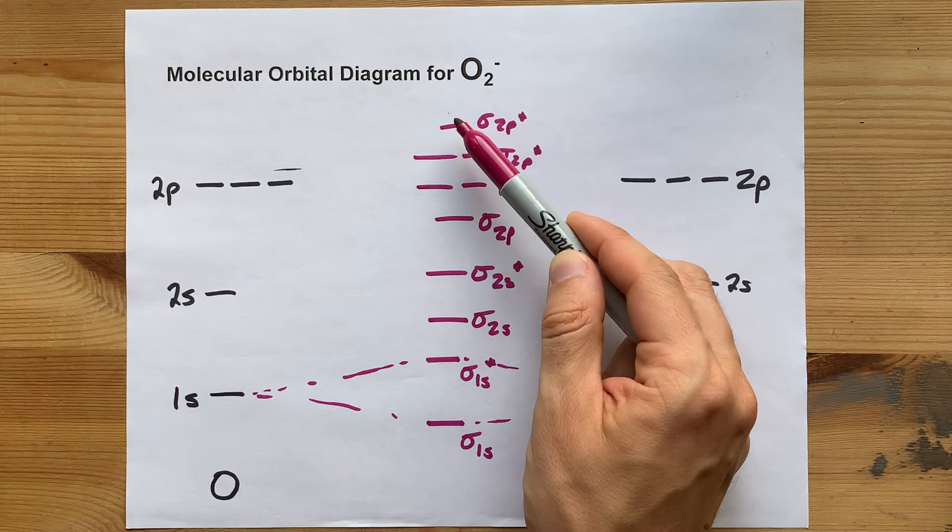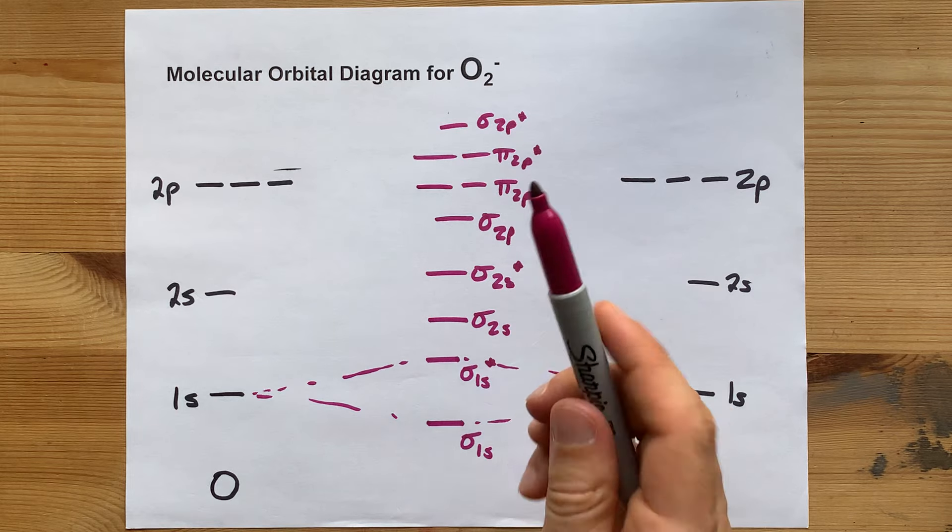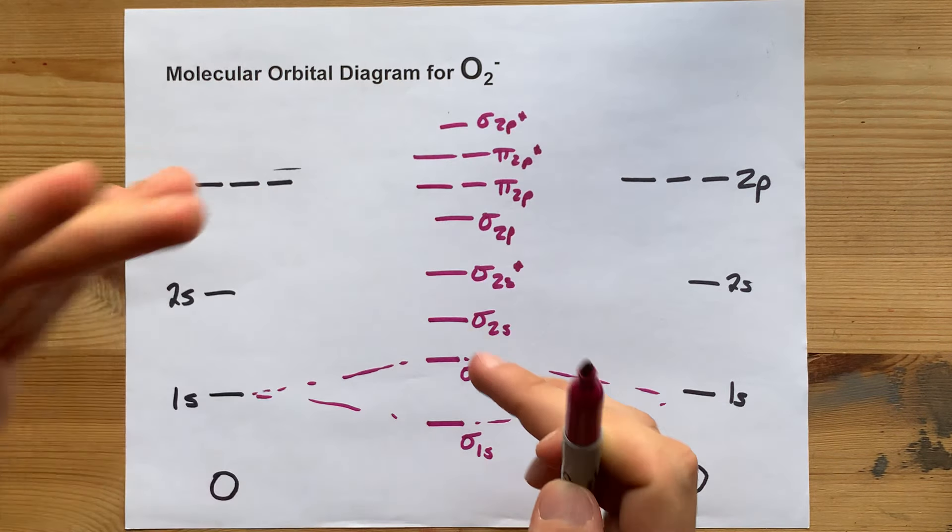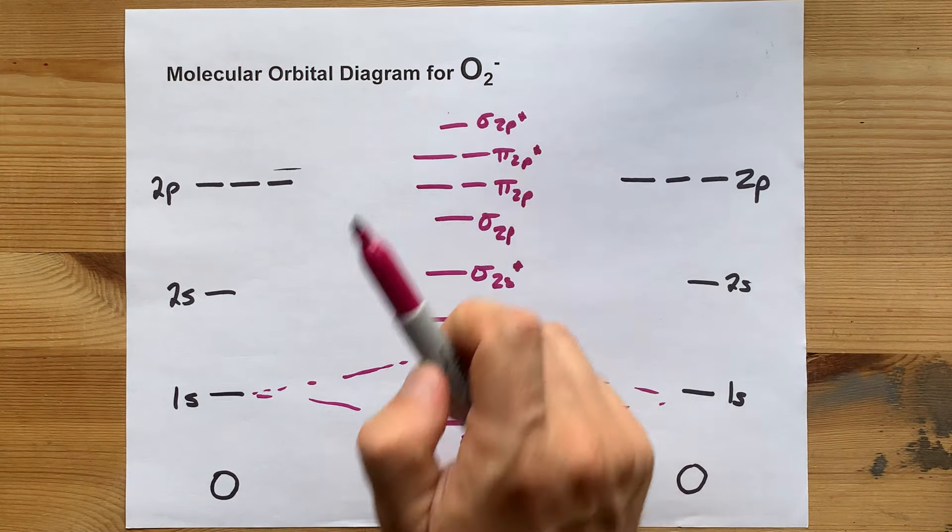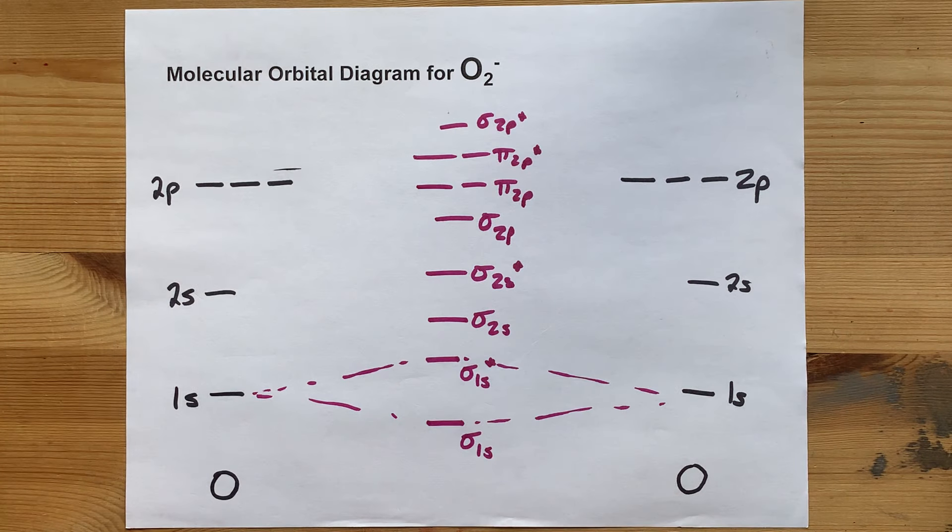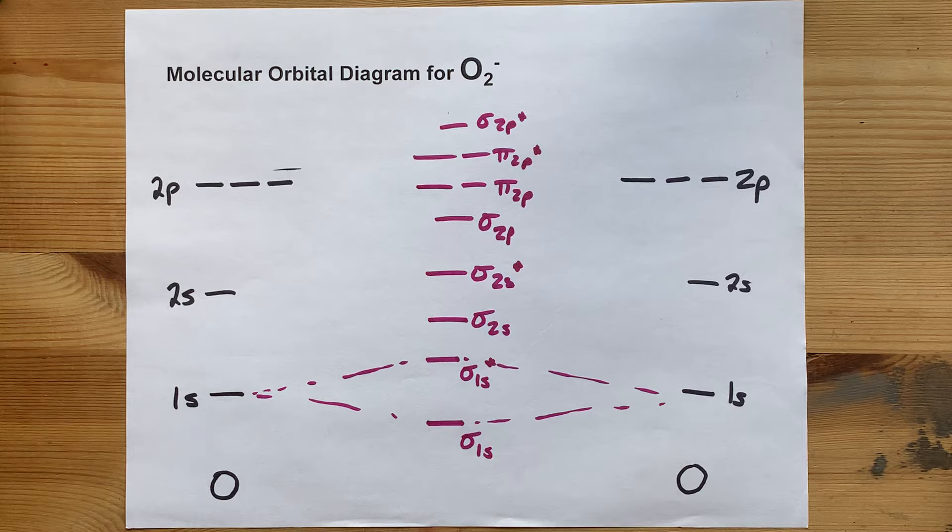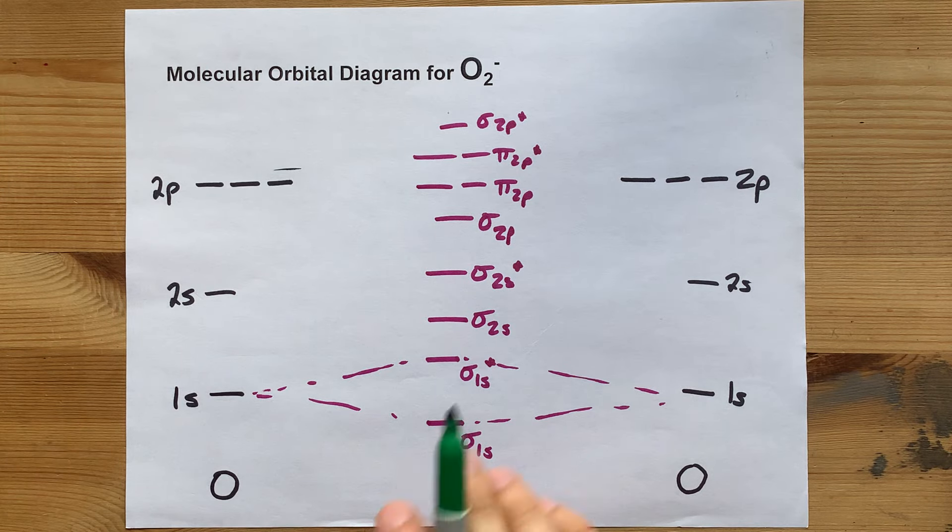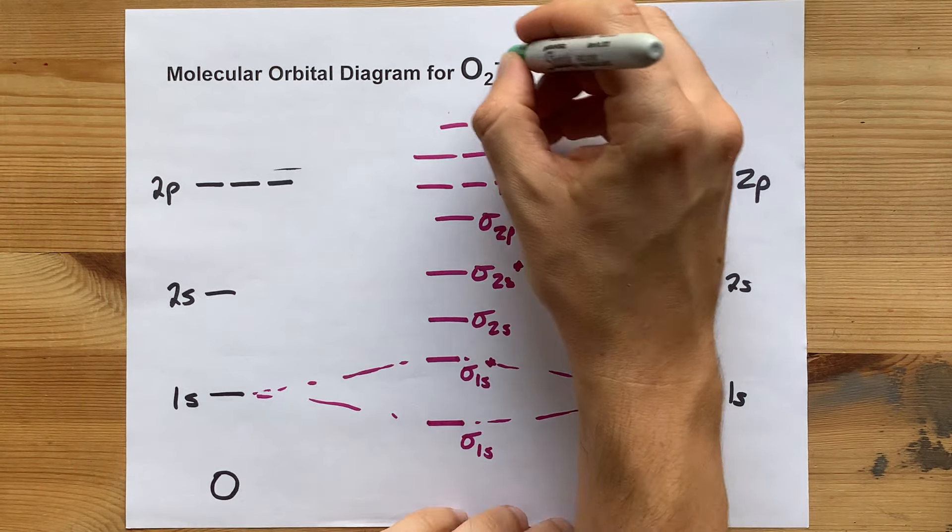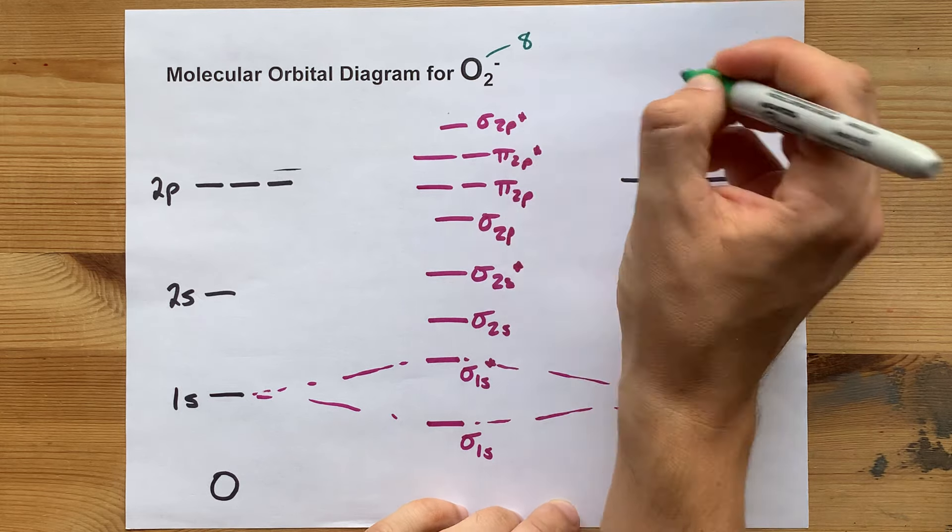The reason this order is different than for boron, carbon, nitrogen is because of the size of the oxygen atom and the pull that they have on the orbitals themselves. What matters to you, probably, is the fact that oxygen brings 8 electrons each, and there are 2 of them.